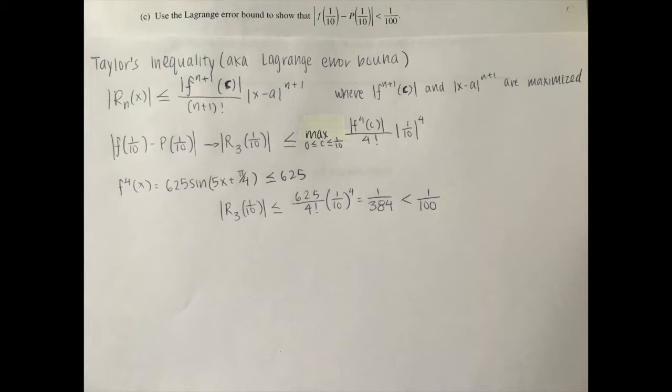To maximize x minus a to the power of n plus one, we would realize that x equals zero and then therefore a would have to be one-tenth. Our overall inequality would look like this. The absolute value of r of one-tenth is less than or equal to 625 divided by 4 factorial times one-tenth to the power of 4. This would equal to 1 over 384, which is less than 100.